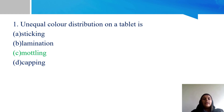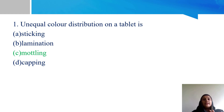For unequal color distribution, mottling is the right answer. When you have unequal color distribution, sticking refers to inactive ingredients. The drug and inactive ingredients include coloring agents, flavoring agents, and disintegrants.